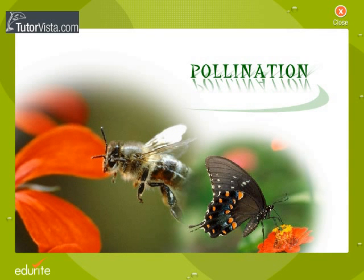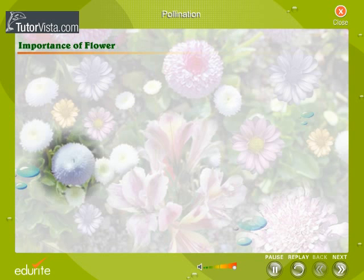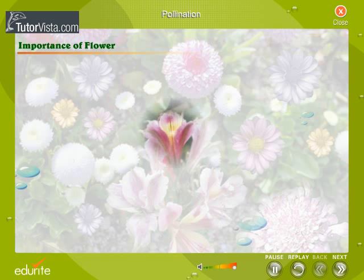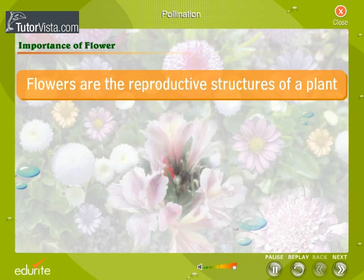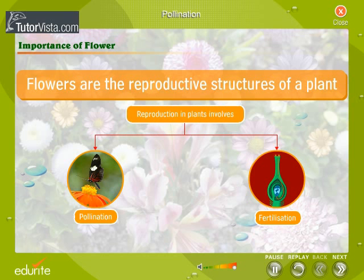Pollination. Why do plants need flowers? Flowers have a major role in the life of a plant. They are the reproductive structures of a plant. Reproduction in plants involves two processes that happen in the flowers: pollination and fertilization. Let us examine pollination now.